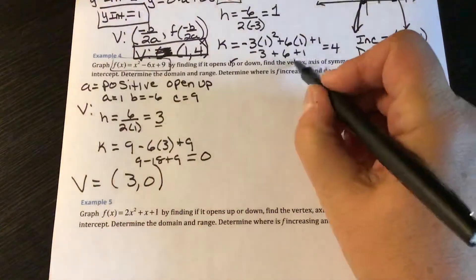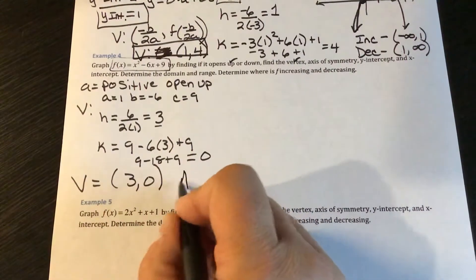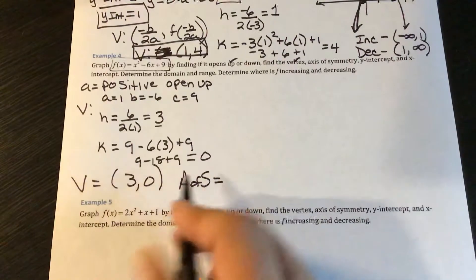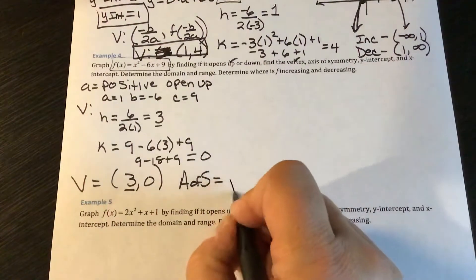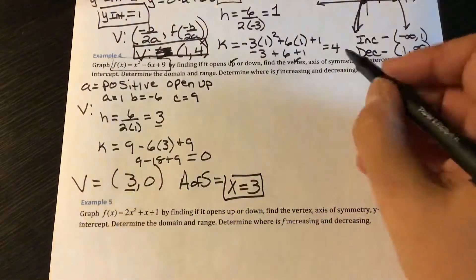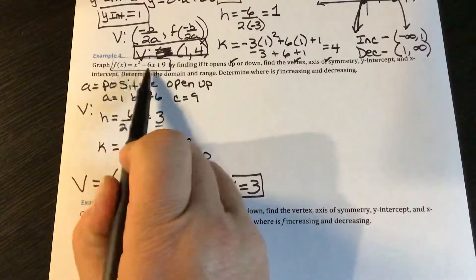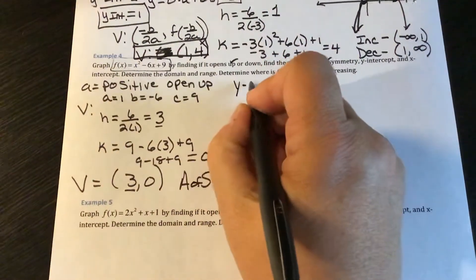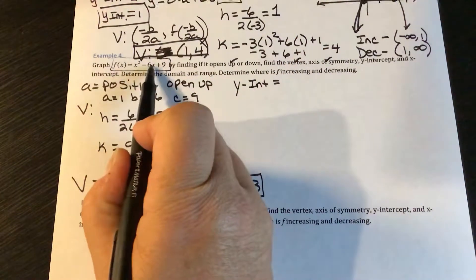The axis of symmetry is the vertical line through the x-coordinate of the vertex, so it's the line x equals 3. For the y-intercept, we set x equal to 0: the first two terms become 0, leaving just the constant, so the y-intercept is positive 9.